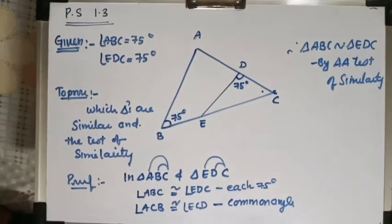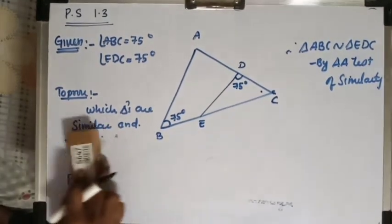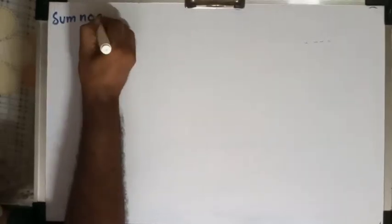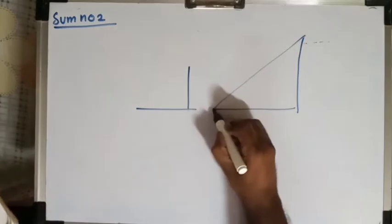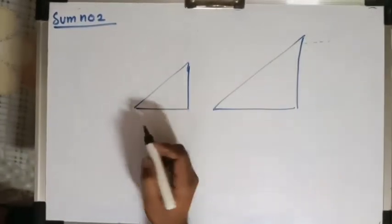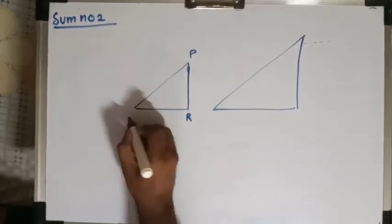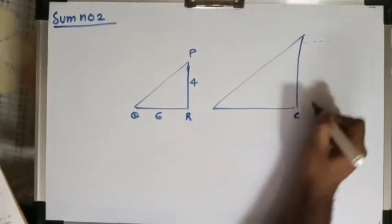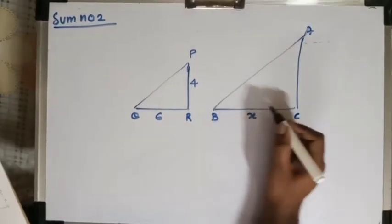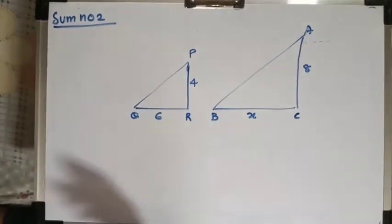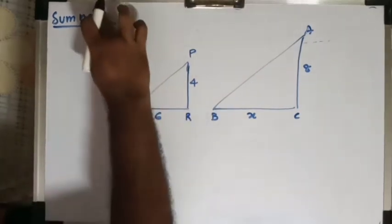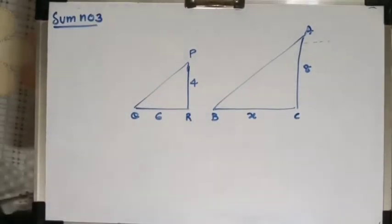I hope you understood this — please make a note of it. Now we will be doing sum number 3 first. There are two triangles shown: one with sides 6 and 4, the other with sides X and 8.